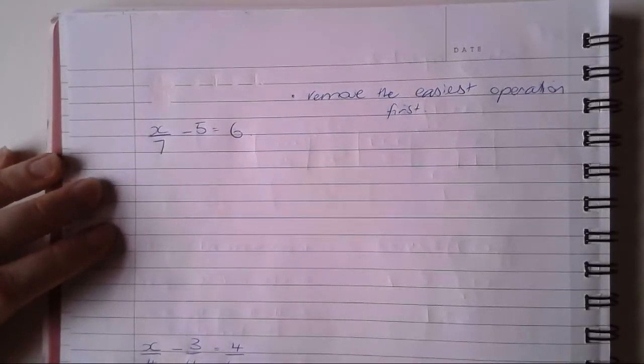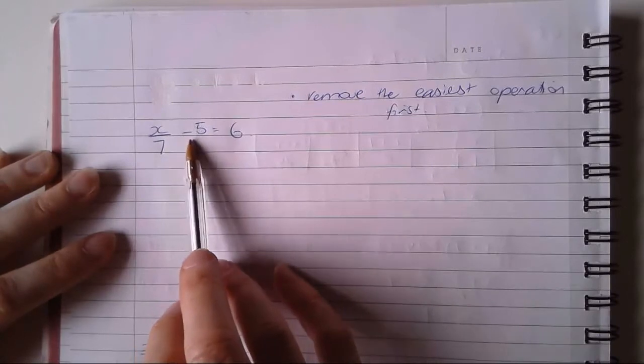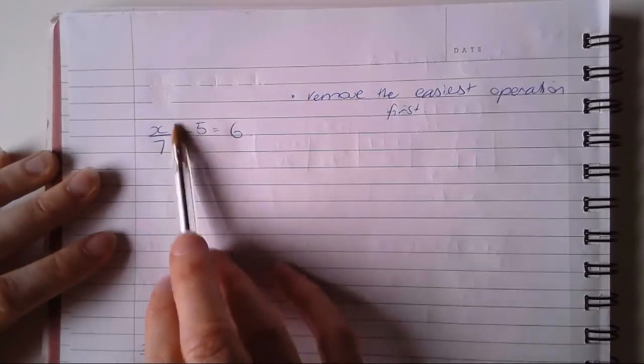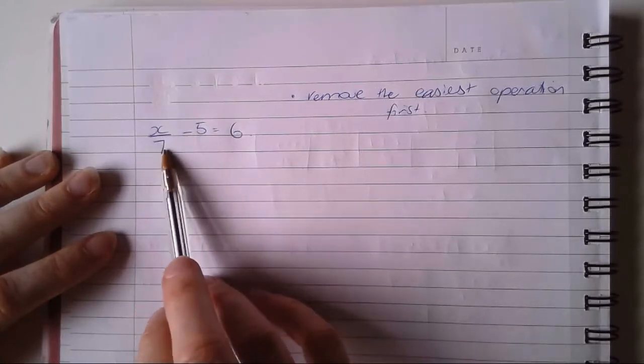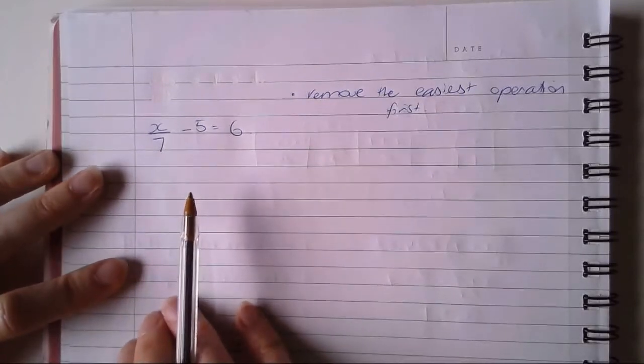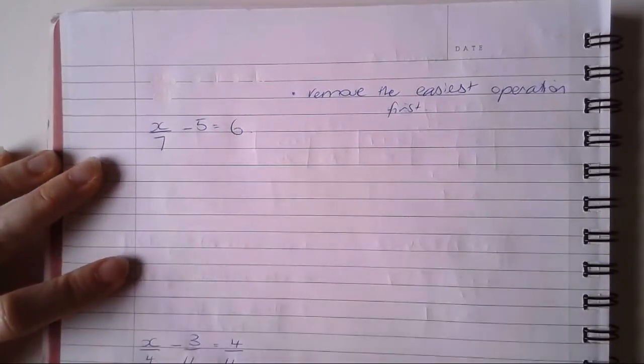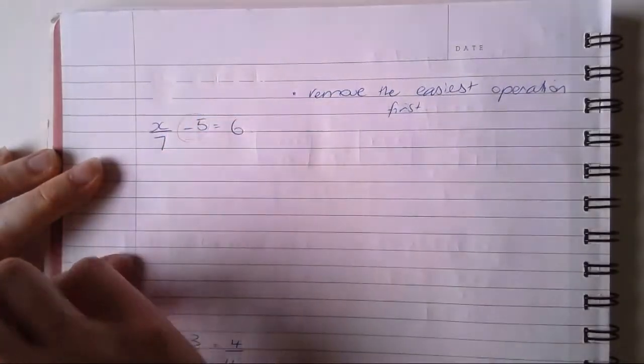So here, I don't have any brackets like my previous examples in other videos, so I have two choices. I could remove my number that's by itself first, or I could remove my divide by seven. Now, what I want you to try and think about when you're solving these equations is to remove the easiest operation first. Anything that's just a single plus minus is a really good place to start if there's no brackets. So that's what I'm going to do here. I'm going to remove this minus five.